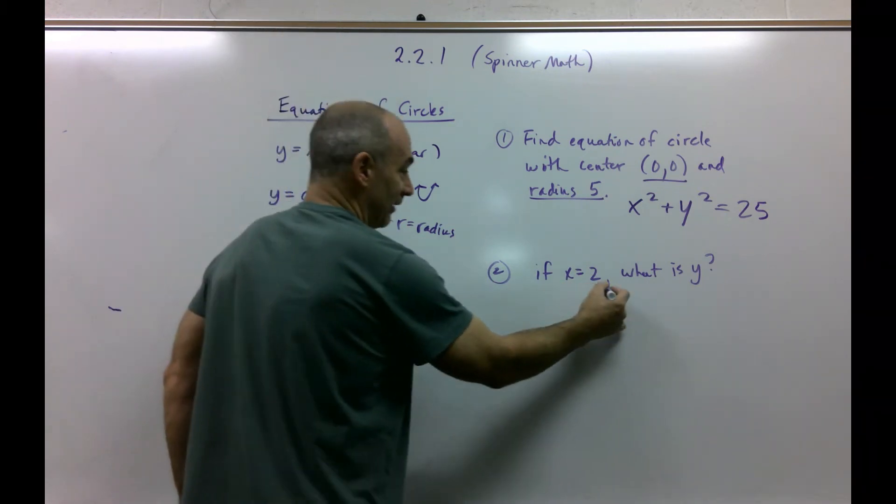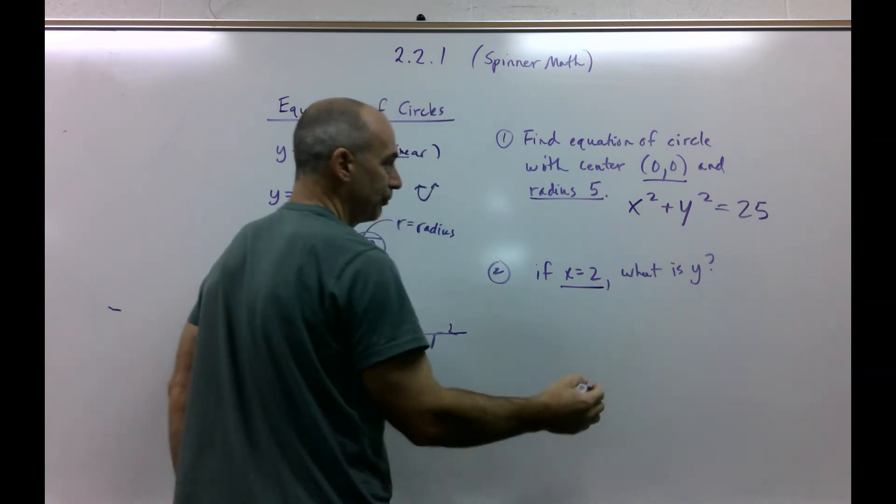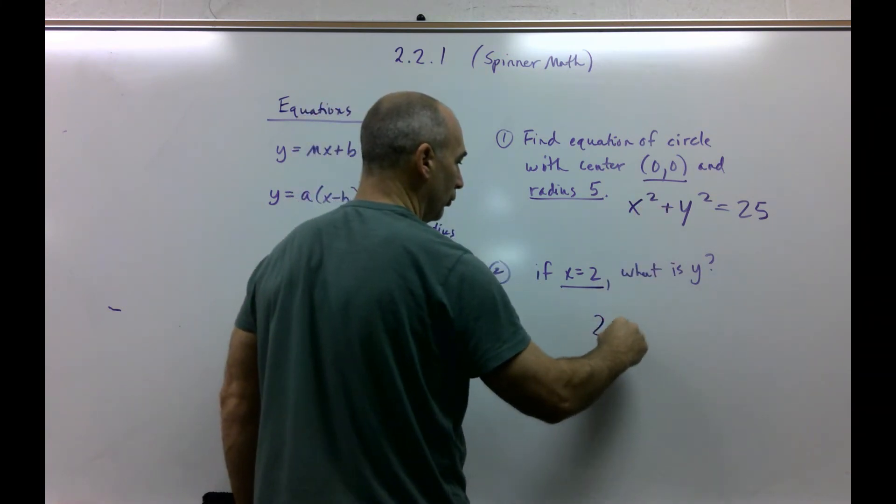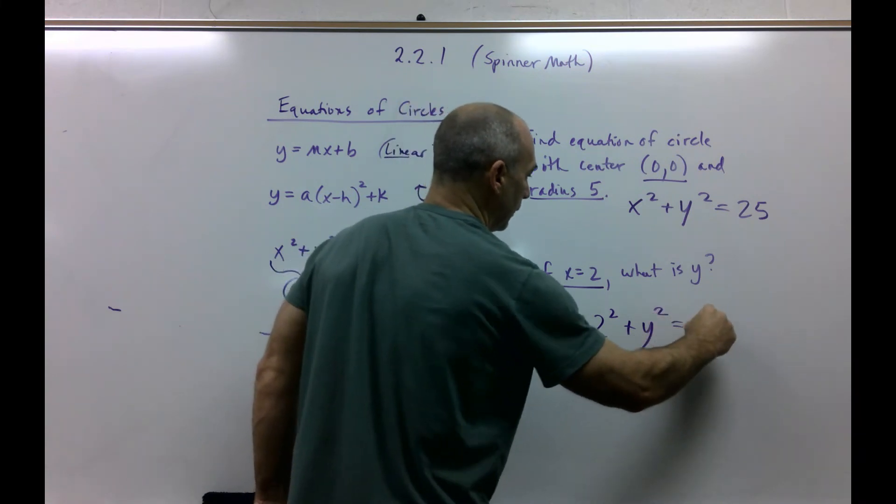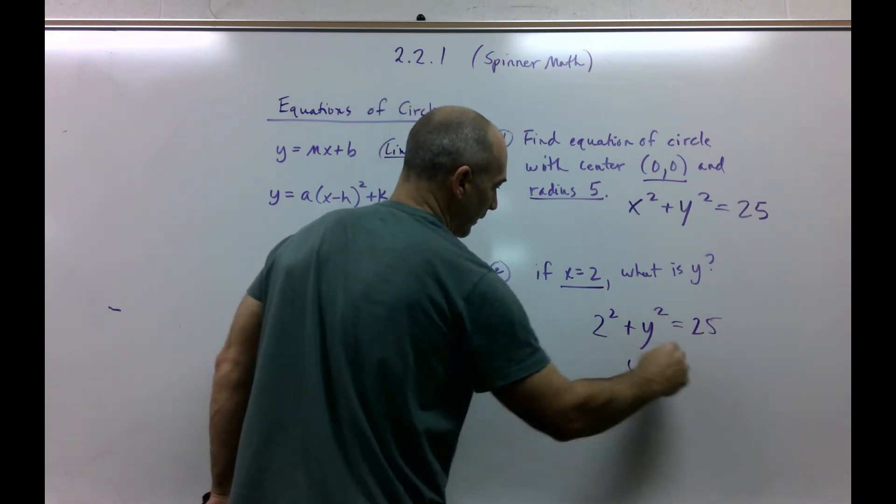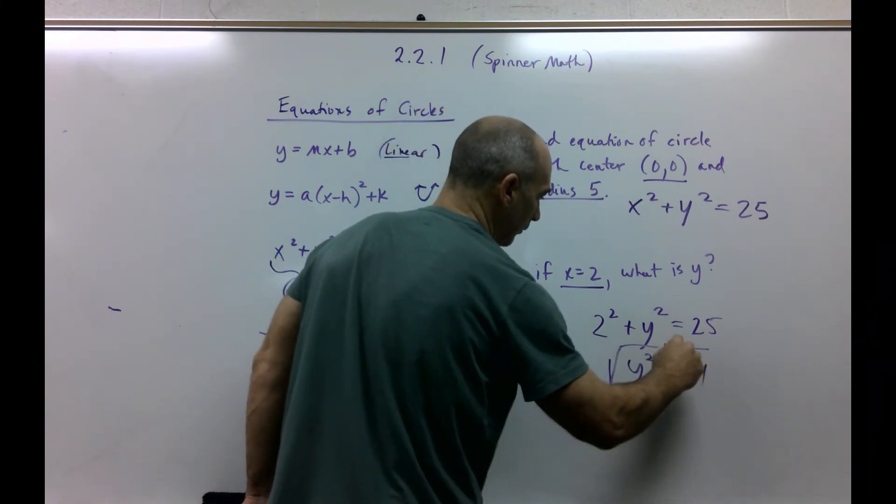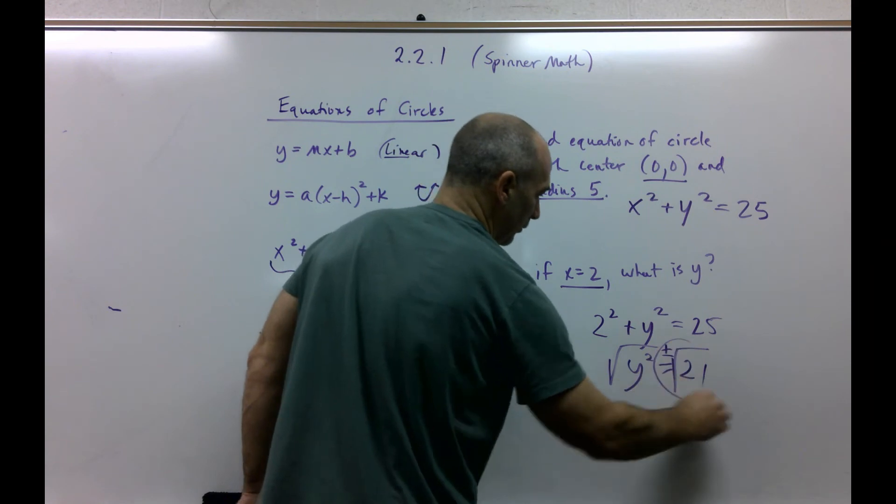But this says, if x equals 2, what's y? So we've got to pop it in here. So we're going to go 2 squared plus y squared equals 25. That's 4. So y squared, if I subtract 4, is 21. Bada boom. Bada bing. Do the right thing. So there's my two answers for y.